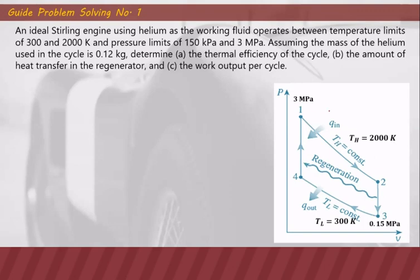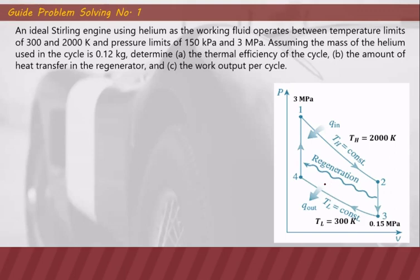Here is the T-V diagram. We are operating with temperature limits of 300 Kelvin at points 3 and 4, which equals the lower temperature limit, and the high temperature limit is T1 and T2 at 2000 Kelvin. For the pressure limits, the lowest pressure is 0.15 MPa at point 3, and the highest pressure is 3 MPa at point 1. Regeneration happens between process 2 to 3 and 1 to 4. Heat input occurs at the isothermal process 1 to 2, and heat rejection occurs at isothermal process 3 to 4.